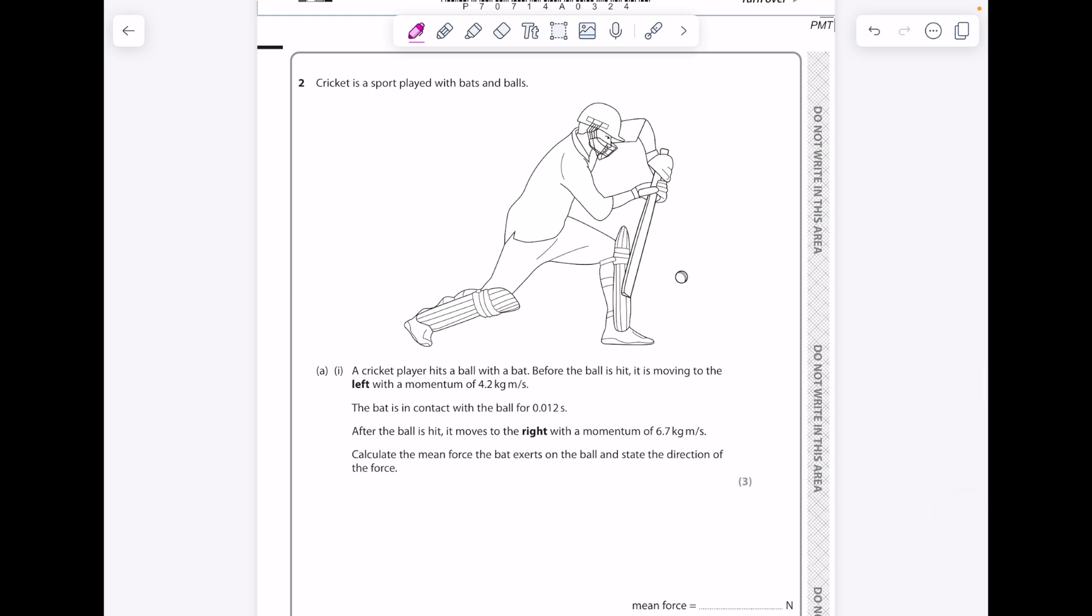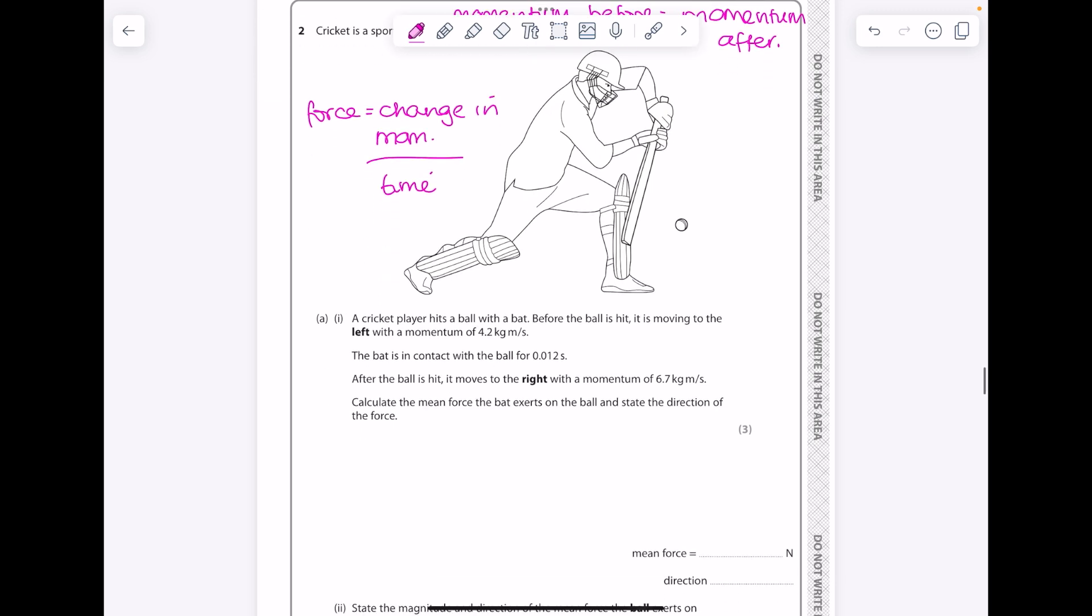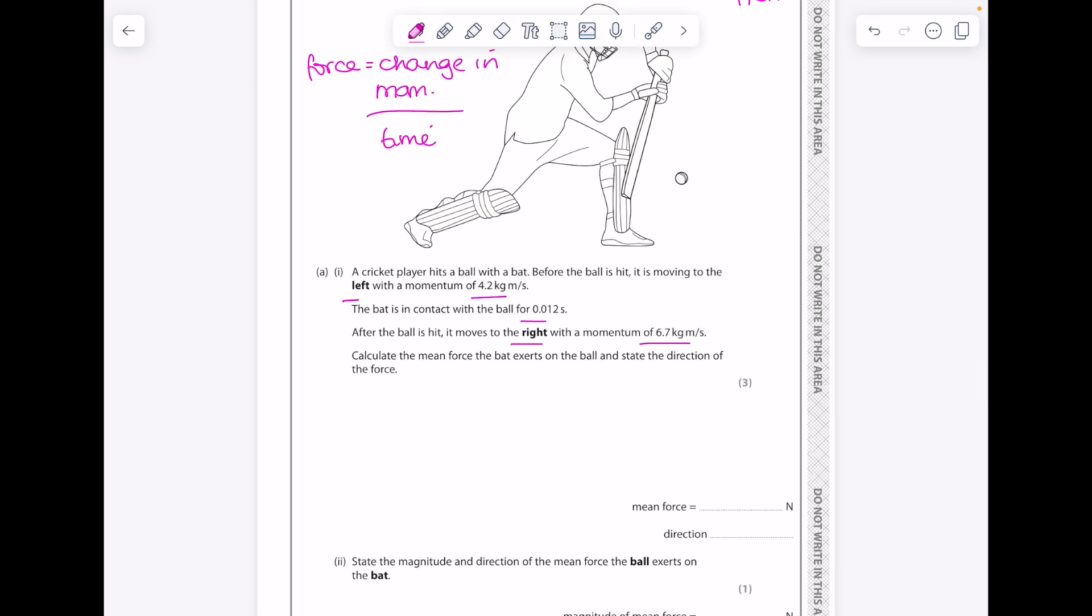And then momentum - another important paper 2 topic. Remember, the conservation of momentum states that momentum before equals momentum afterwards. The other momentum equation to be aware of is force equals change in momentum over time. We'll go through a question here. A cricket player hits a ball with a bat. Before the ball is hit, it's moving to the left with a momentum of 4.2 kg·m/s. The bat is in contact with the ball for 0.012 seconds. After the ball is hit, it moves to the right with a momentum of 6.7 kg·m/s. Calculate the mean force the bat exerts on the ball and state the direction of the force. Please don't stress, we're going to use force equals change in momentum over time.